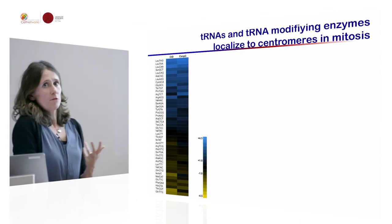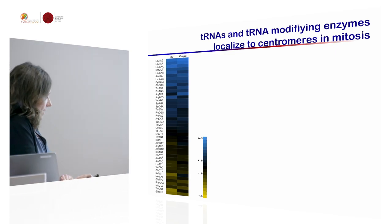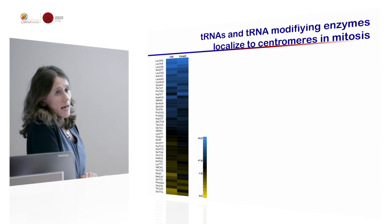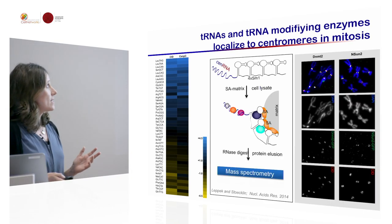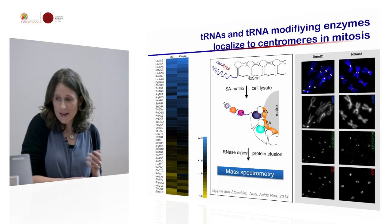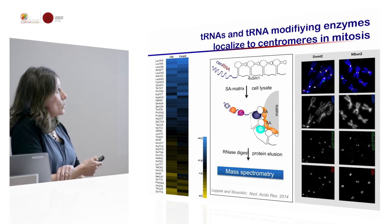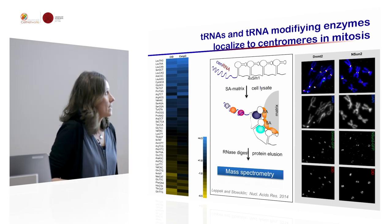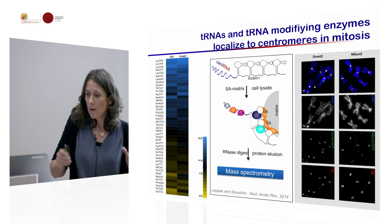We have already done this and find many different RNAs, but what was really surprising to us is that tRNAs are actually highly enriched at centromeric chromatin — nothing to do with translation, we think. This was particularly interesting because when we pulled down satellite 3 or other centromeric RNAs, we also found that tRNA-modifying enzymes — for instance, DNMT2 and Enzyme2, which are tRNA-specific methyltransferases — also highly specifically localize to centromeric chromatin in mitosis.